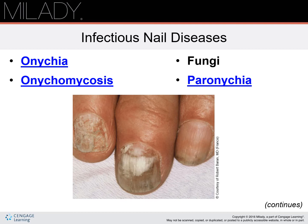Onychomycosis is a fungal infection of the natural nail plate. A common form is whitish patches that can be scraped off the surface of the nail. Another common form shows long whitish or pale yellowish streaks within the nail plate. Fungi are parasites which may cause infections on the hands and feet. They are contagious and can be transmitted through contaminated implements.